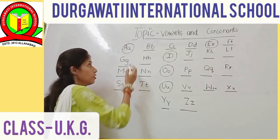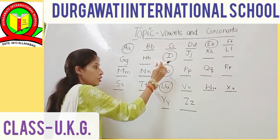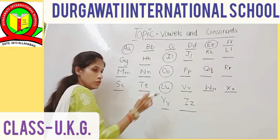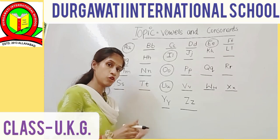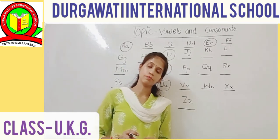These are A, E, I, O, U. There are 5 vowels and the 21 are consonants.